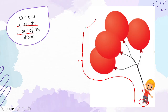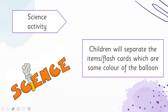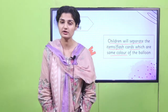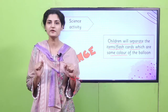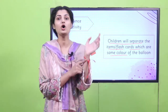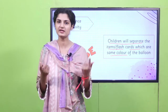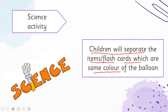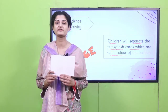Now it's time for another activity — the science corner. Children will separate the items or flashcards which are of the same color as the balloon. Instructions are very simple: you are going to quickly go into your science corner and bring back the things or flashcards of the same color you are wearing on your hand, or the same color as the balloons given in your book. Now pause your video here, grab the things, and come back. I hope you are back because I am waiting for you with my flashcards and things to show you of red color.